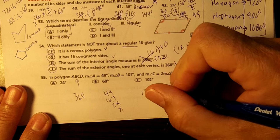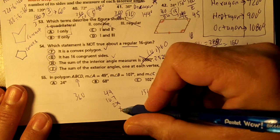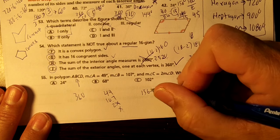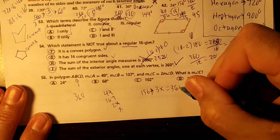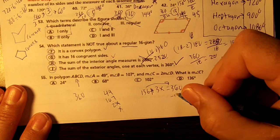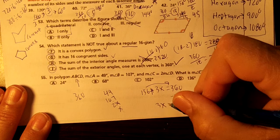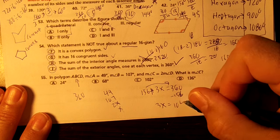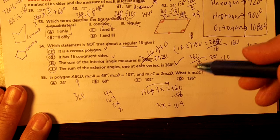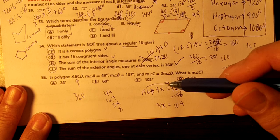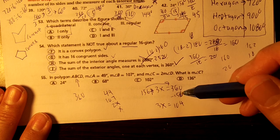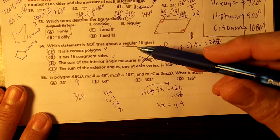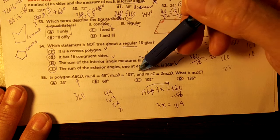49 and 107 add up to 156. 2X plus 1X is 3X, and that's going to equal 360. So you move over the 156. You get 3X equals—make sure I write that right—104. 156 subtract, get 104. 49, 107.